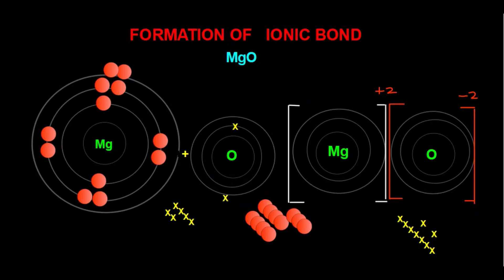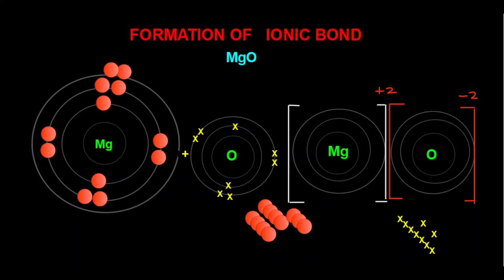In the K shell of oxygen there are two electrons, and in the L shell oxygen has six electrons. Now, magnesium will lose its two M-shell electrons in a chemical reaction. These two electrons are picked up by oxygen, so oxygen changes to the oxide ion. Electrons are transferred from magnesium to oxygen.